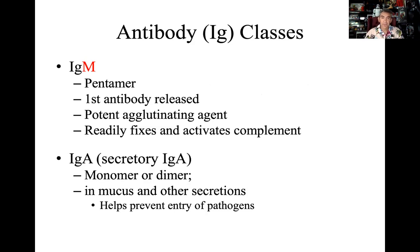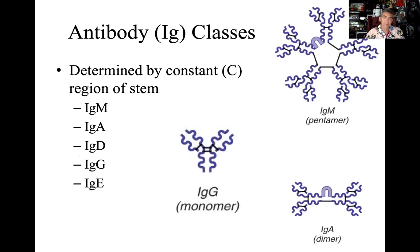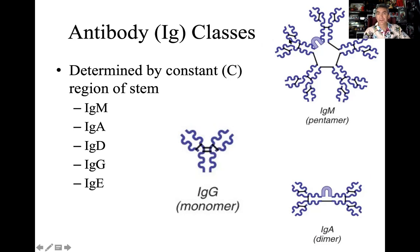IgM is important because it is the first antibody released — the first class of antibody secreted. Why would it be first? I always think of Marines: if there's a war, who's right there at the front line? The Marines. So think of IgM as Ig-Marines. IgM is the pentamer form — it has all these arms to attach and connect to antigens, making it a very good first warrior.